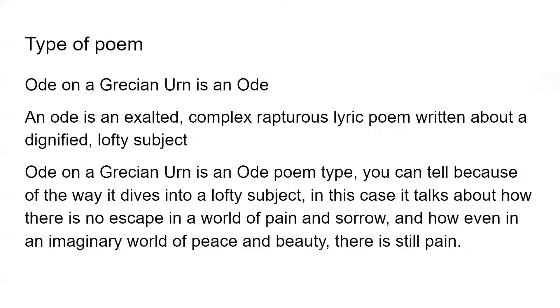Type of poem. Ode on a Grecian urn is an ode, as says in the title. An ode is an exalted, complex, rapturous lyric poem written about a dignified, lofty subject. Ode on a Grecian urn is an ode poem type. You can tell because of the way it dives into a lofty subject. In this case, it talks about how there is no escape in a world of pain and sorrow, and how even in an imaginary world of peace and beauty, there is still pain.